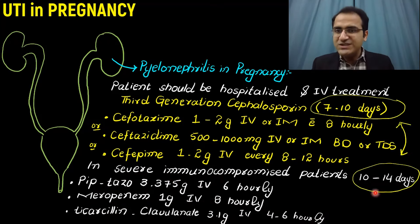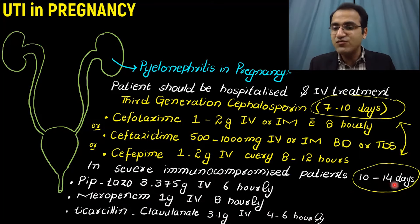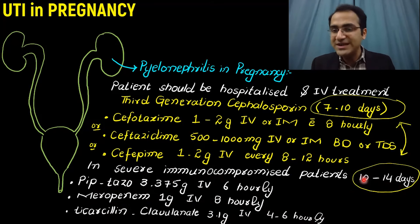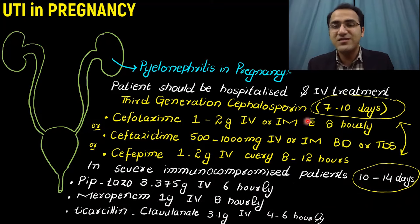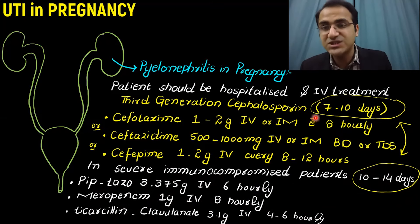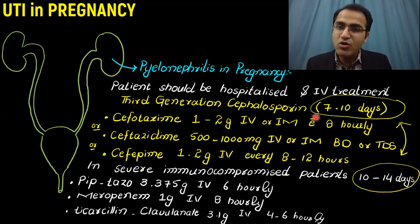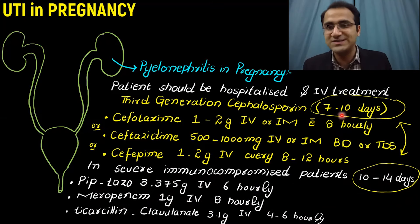To compare the difference in timing: if the patient is having severe infection or is immunocompromised, give 10 to 14 days of treatment. If the patient is not having severe infection and is immunocompetent, give treatment for 7 to 10 days.